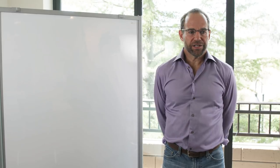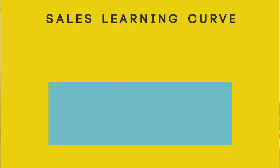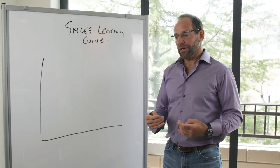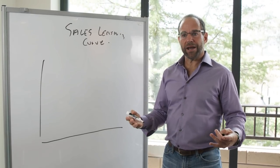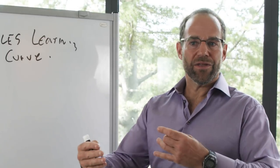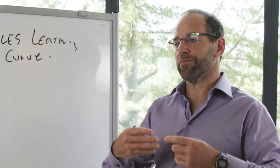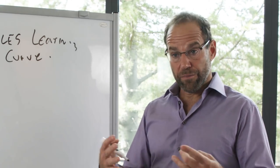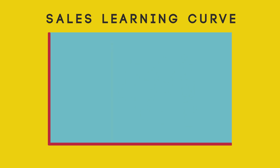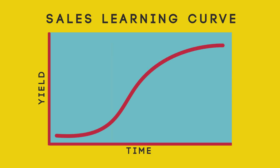The first part of building out a sales organization is understanding the sales learning curve. It takes time for an organization to understand how to sell its product. Just like it takes time to build a product, it takes time to understand how a customer buys, the productivity of a salesperson, and the overall organization — and that's what the sales learning curve depicts. On this axis is the yield, over here is time, and it's divided into three phases.